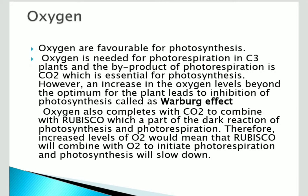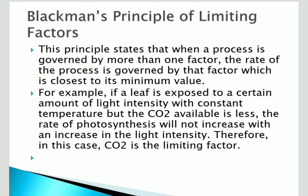The next factor is oxygen. Oxygen is needed for photorespiration in C3 plants, and the byproduct of photorespiration is CO2, which is essential for photosynthesis, but it is a wasteful process. Oxygen can inhibit photosynthesis because the RuBisCO enzyme, which is part of the dark reaction, has affinity for both oxygen and carbon dioxide, thus decreasing photosynthesis. This effect is called the Warburg effect.